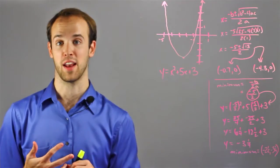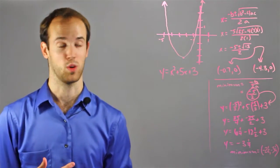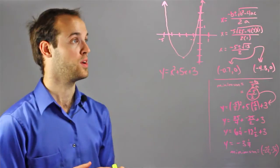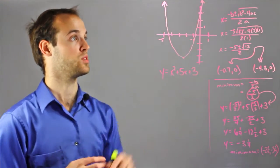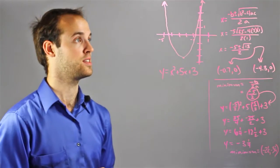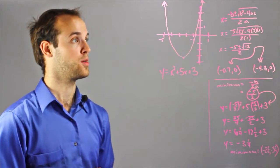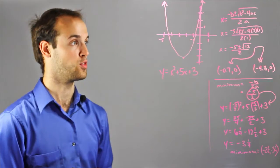The first step in finding the domain and range is actually going to be to graph this function, which I've already done lots of the work for you. It starts with the quadratic formula, which is x equals negative b plus or minus the square root of b squared minus 4ac over 2a.